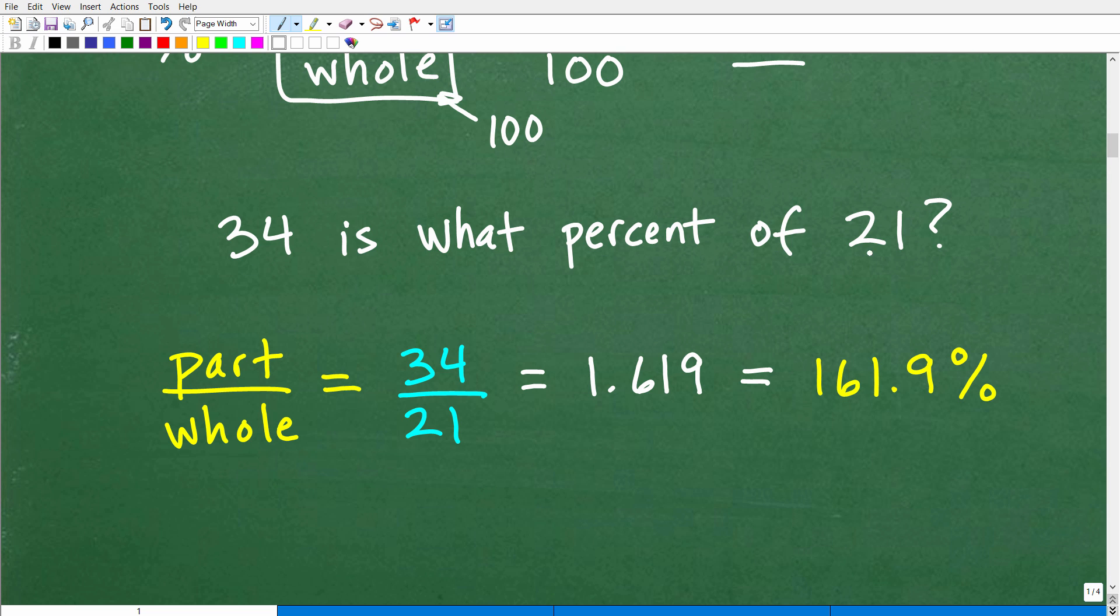All right, so 34 is what percent of 21? So I'm going to kind of think of this as the part out of the whole type thing, right? But this could be kind of confusing for a lot of people.